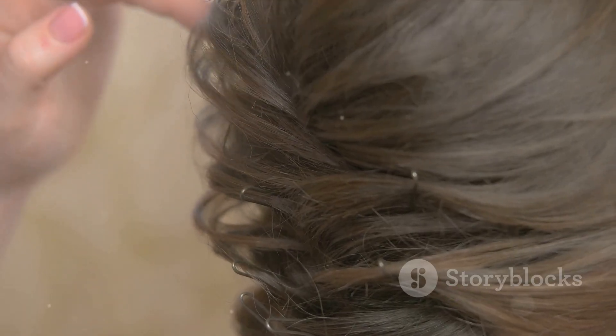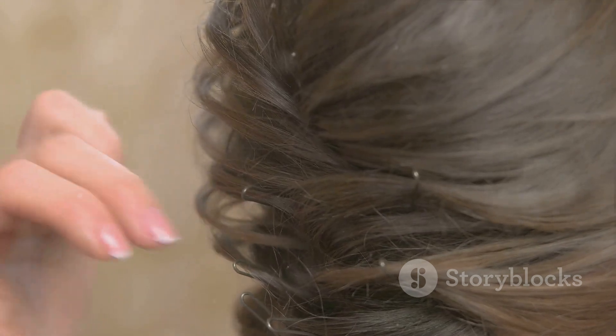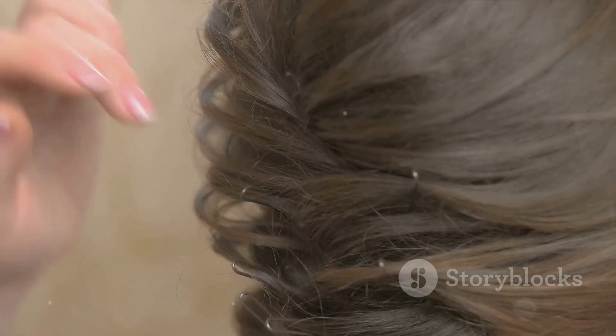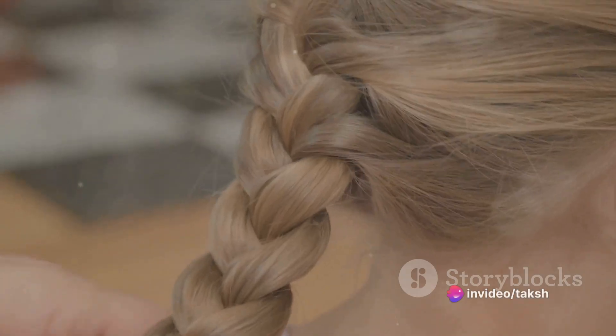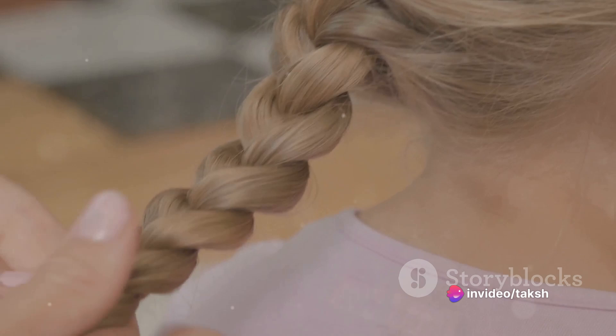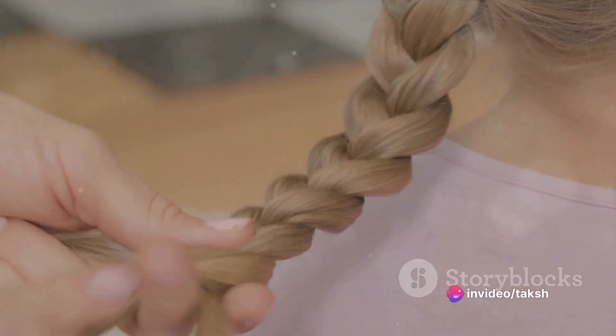Finally, there are alkynes, another type of unsaturated hydrocarbons, but with a twist. They have a triple bond between carbon atoms. Think about a braid of hair with three strands intertwined, symbolizing the triple bonds.